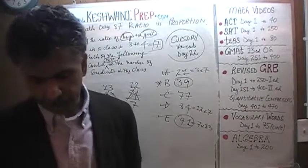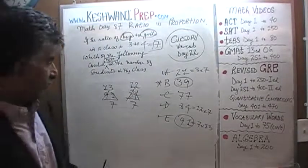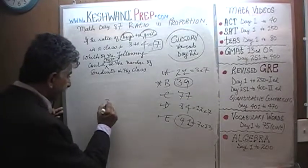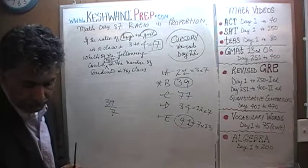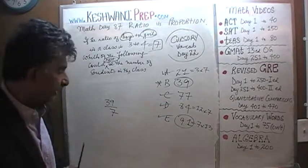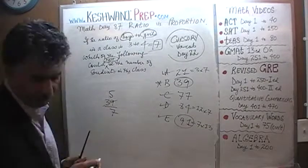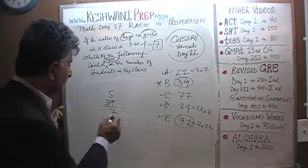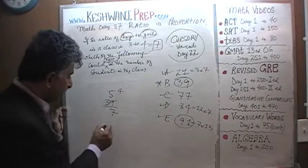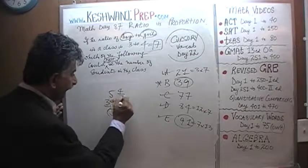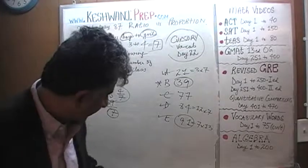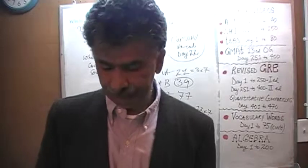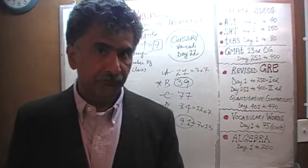39 is not divisible by 7. Dividing 39 by 7: 39 has five 7s (35), leaving a remainder of 4. That 4 is to be divided by 7, giving 5 and 4/7. It would be very annoying to have 5 and four-sevenths of a child in the class, so 39 is not possible. The answer is B. I'll see you tomorrow — bye now.